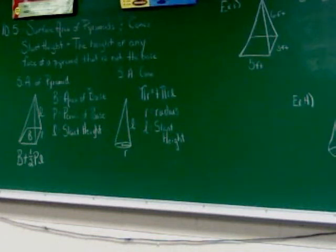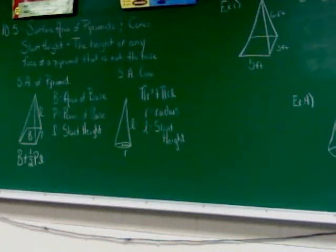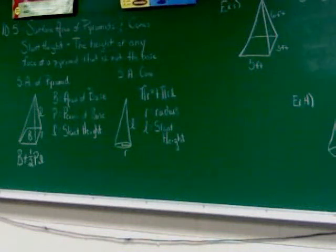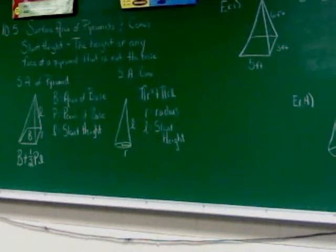The formula for surface area of the pyramid is B plus one-half PL, where B is the area of the base, P is the perimeter of the base, and L is the slant height.